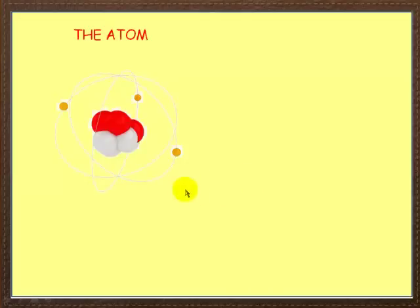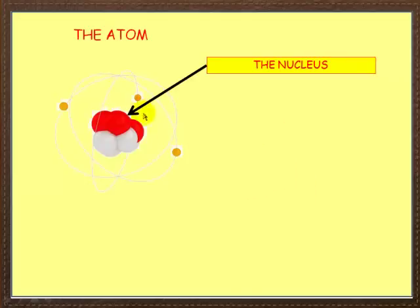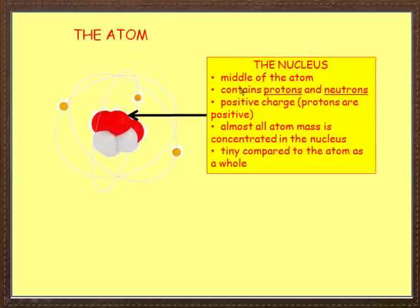Here we've got the basic atom. In the middle, this bit here is called the nucleus. And what do you know about the nucleus? Well, it's the middle of the atom. It contains protons — for example these red bits here — and neutrons, which could be the white ones here. We know the nucleus has a positive charge because protons are positive.